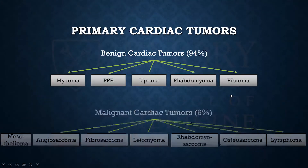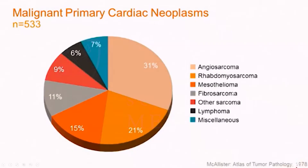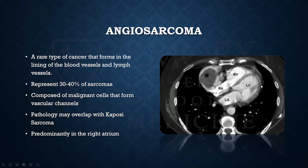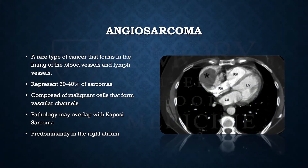Moving on to malignant cardiac tumors. The major takeaway is that malignant primary cardiac tumors are extraordinarily rare. The most common are angiosarcoma, rhabdomyosarcoma, and mesothelioma. Angiosarcoma is seen here on CT scan involving the right atrium — a very rare cancer that is an abnormal proliferation of blood vessels, representing about 30 to 40% of cardiac sarcomas.